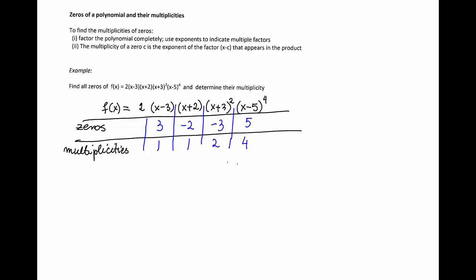So this way we determined the zeros of the function f of x: 3, negative 2, negative 3, and 5, and the multiplicities respectively 1, 1, 2, and 4.